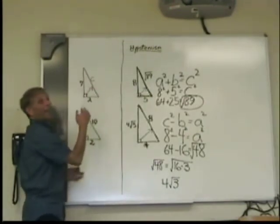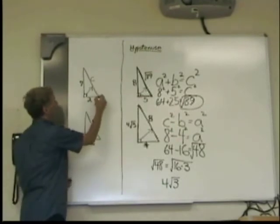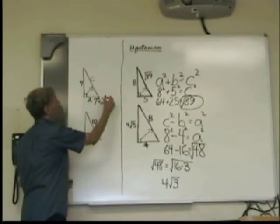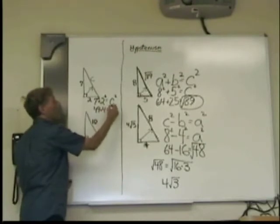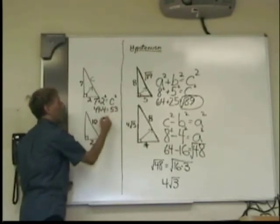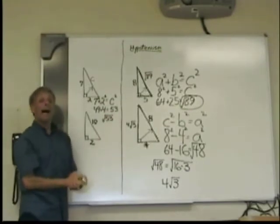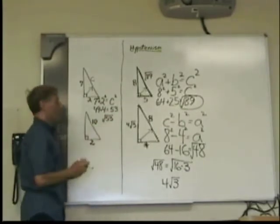So I'm adding 7 squared plus 2 squared equals C squared. That's 49 plus 4 equals 53. I square root my answer. And 53 cannot be simplified, so I just leave it.